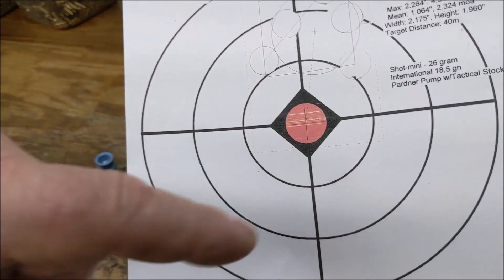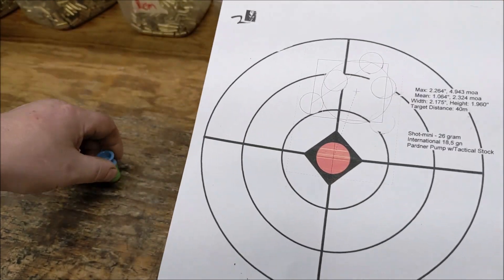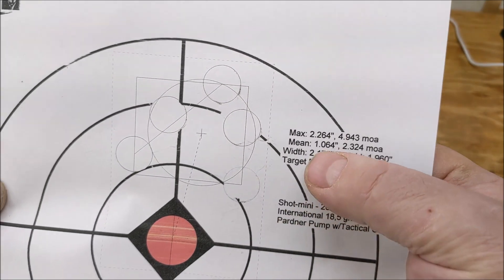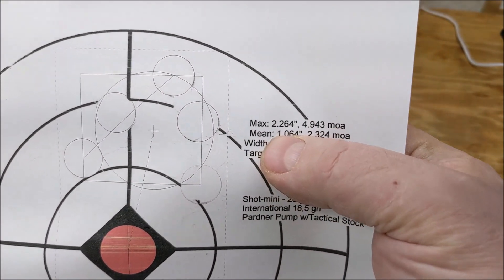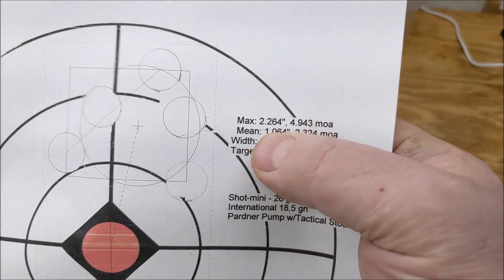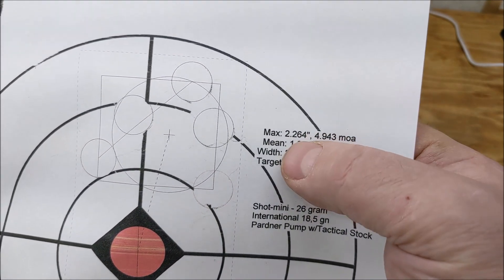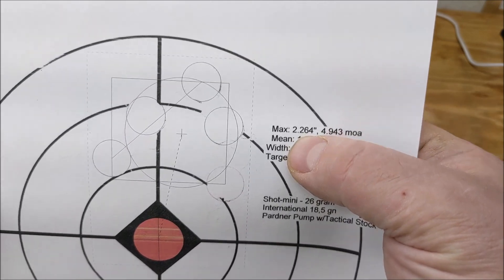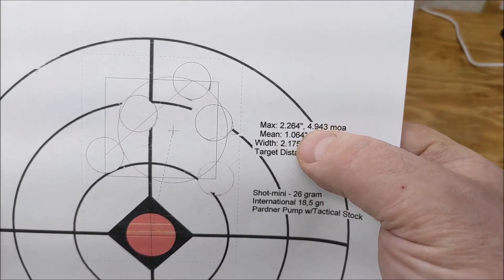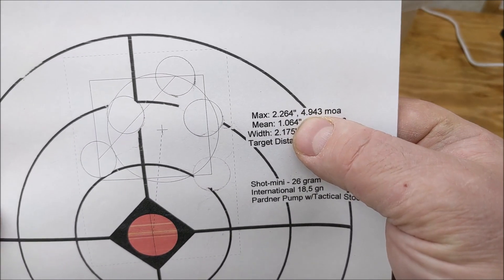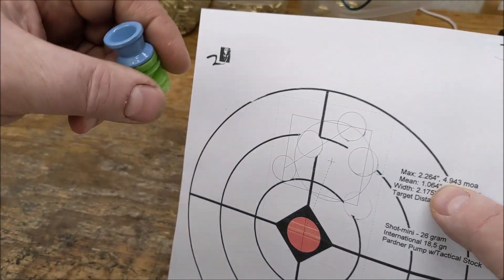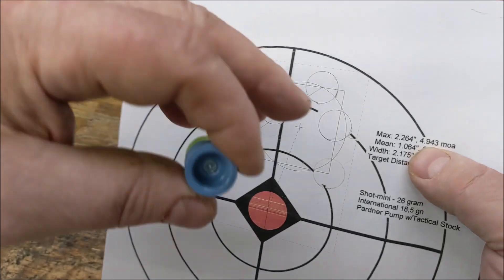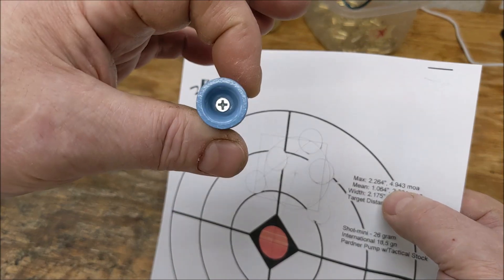These are one inch dot FindIt printed scale targets. At 40 meters I got 2.264 inch group, 4.943 MOA. Of course once they hit out to 200 yards, physics would take over. I wouldn't really expect that.